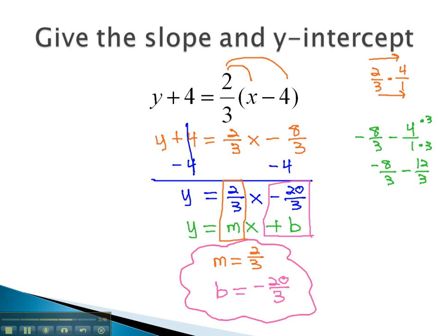We now have the key pieces of information, slope and y-intercept, of the original graph, y plus 4 equals 2 thirds times x minus 4.